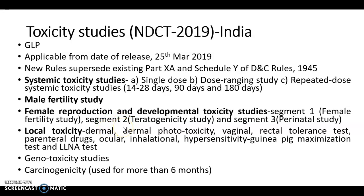Segment 2 is the teratogenicity study, conducted in one rodent and one non-rodent species — typically rat and rabbit. At least 20 pregnant rats per group are required; half are sacrificed for skeletal abnormalities and half for visceral abnormalities. Segment 3 is the perinatal study, required if your molecule is intended for pregnant or lactating mothers. The molecule is administered during the last trimester of pregnancy and all required parameters are evaluated.